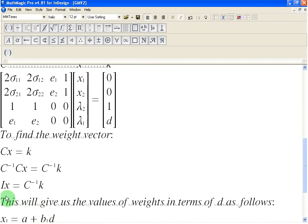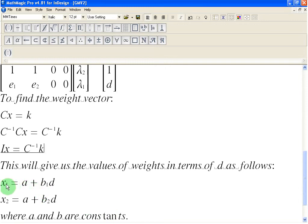So, what you observe is that this calculation is going to give us the values of weights in terms of D in the form of following two equations. X1 is going to be A plus B1 times D. And X2 is going to be A plus B2 times D, where A and B are going to be our constants.